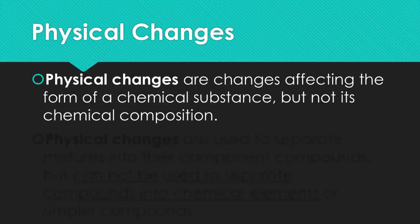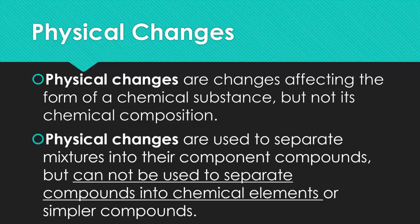A physical change involves changes affecting the form of a chemical substance, but not its chemical composition. So cutting, tearing, grinding, dissolving. Physical changes are used to separate mixtures into their component compounds, but cannot be used to separate compounds into chemical elements or simpler compounds.